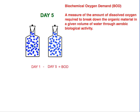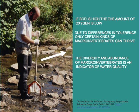The difference in dissolved oxygen levels between day one and day five is a measure of the biochemical oxygen demand — the amount of dissolved oxygen required to break down the organic material in the given volume of water through aerobic biological activity. If BOD is high, the amount of oxygen in the system is low, as a result of the high organic load that must be decomposed by bacteria.